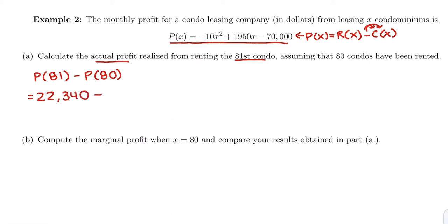That is the profit from all 81 condos. Now let's find the total profit from 80. We're going to take 80 and plug it in: negative 10 times 80 squared plus 1950 times 80 minus 70,000. The total profit from 80 condos is $22,000 even.